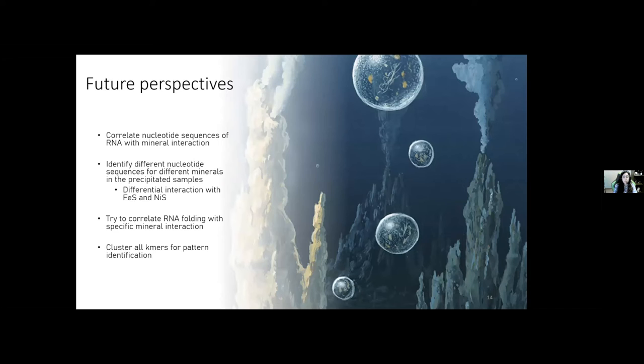Going forward, we still have a lot of questions to be answered in this work. But in this fall, we are planning to apply this pipeline of analysis to more sequences, especially sequences from the iron sulfide samples. Then we are planning to get all the significant k-mers from all the samples, which is the precipitated, the supernatant, and the control samples. Then, to predict their folding structures and try to correlate sequence, folding, and the capacity to interact with both tested materials.